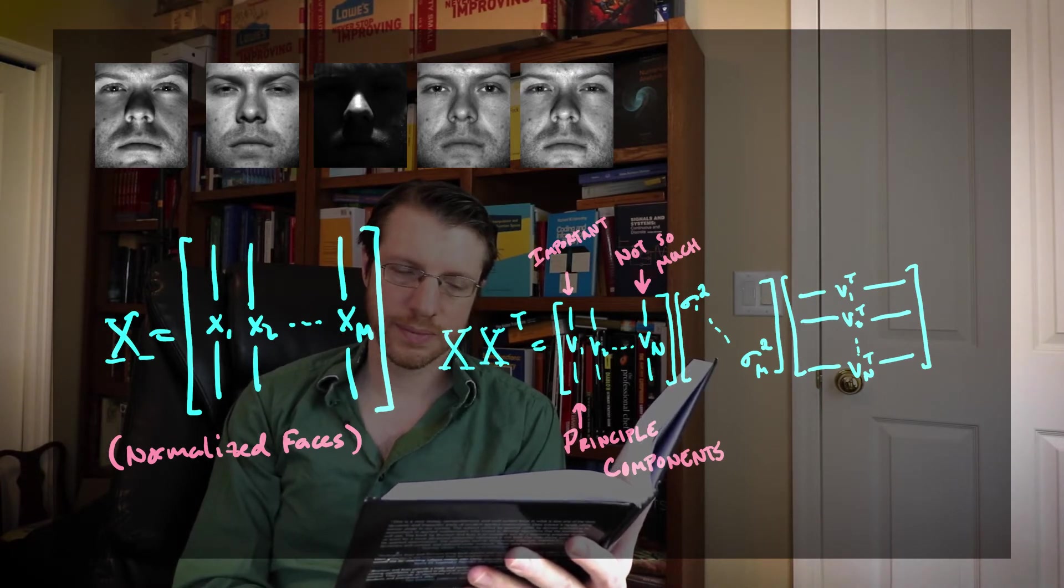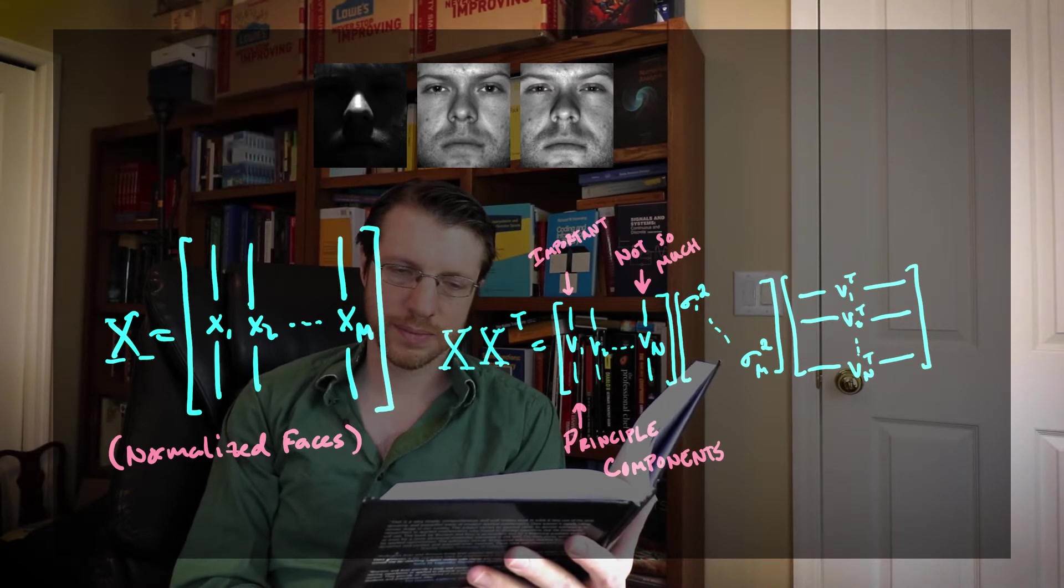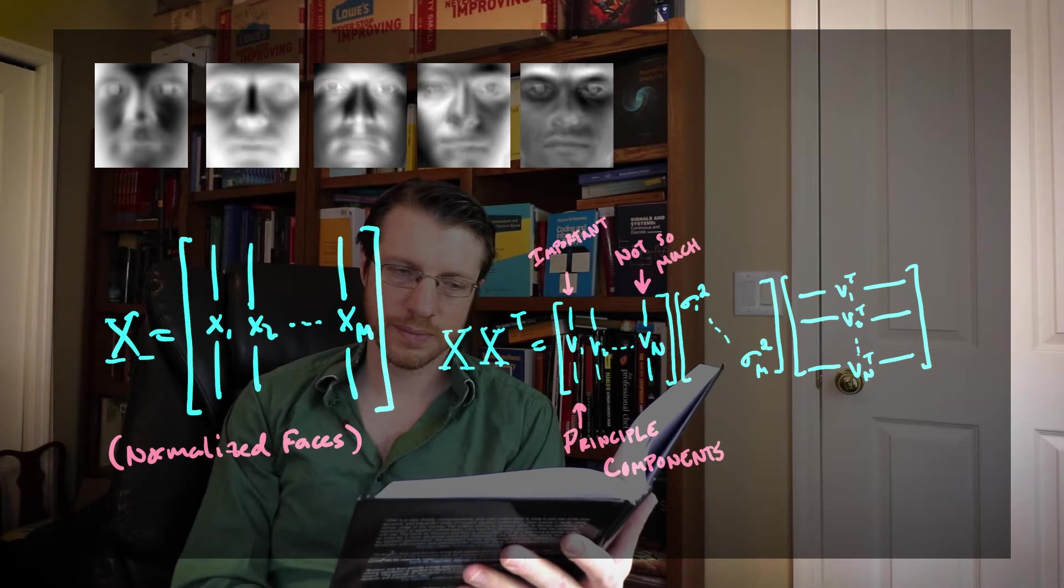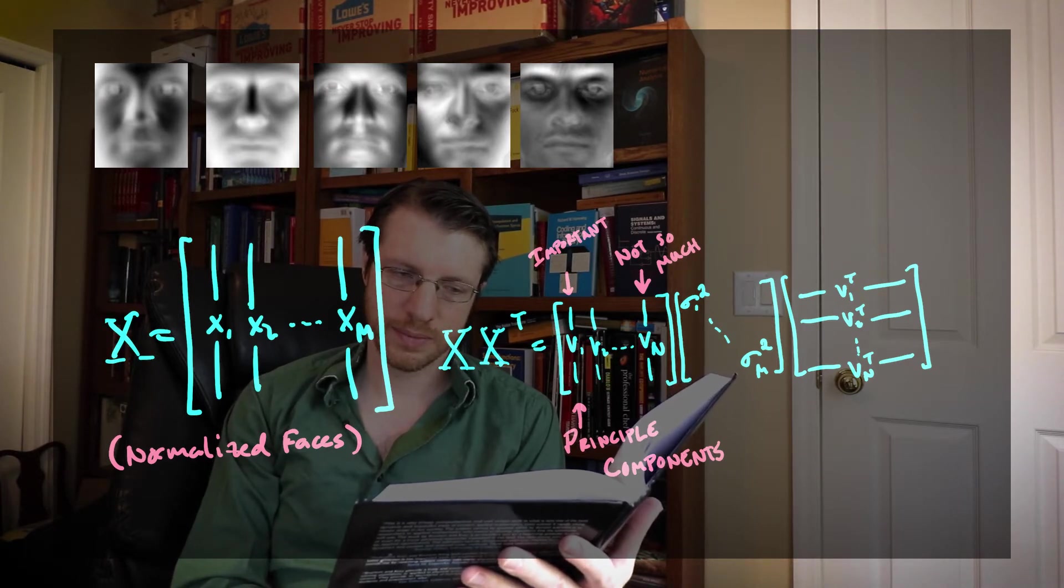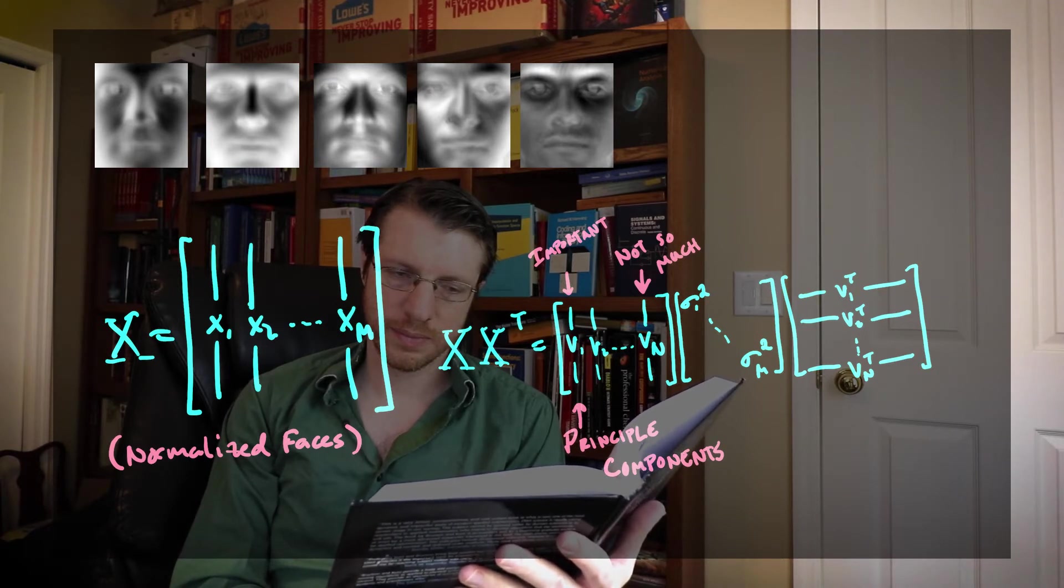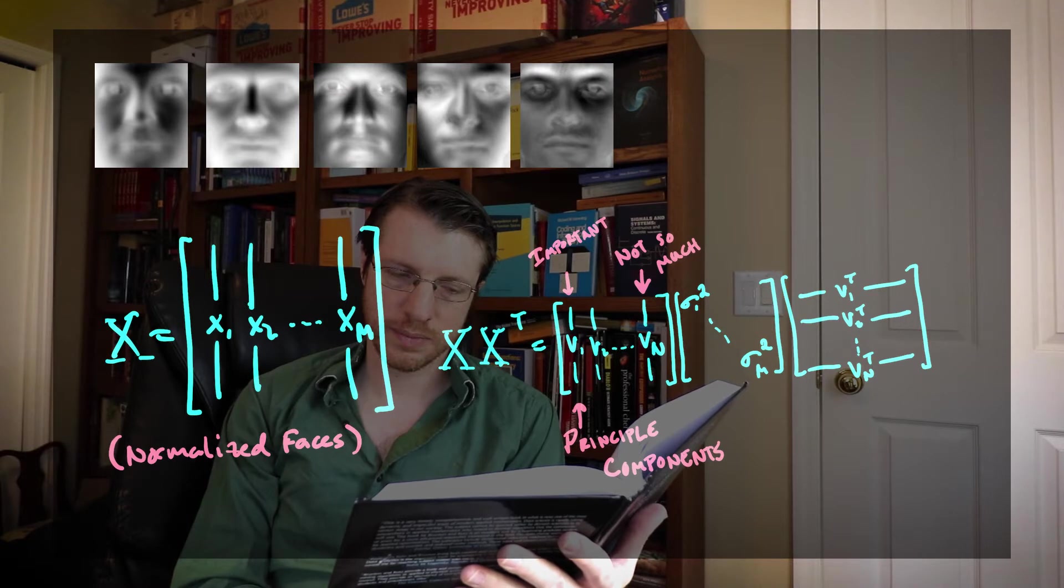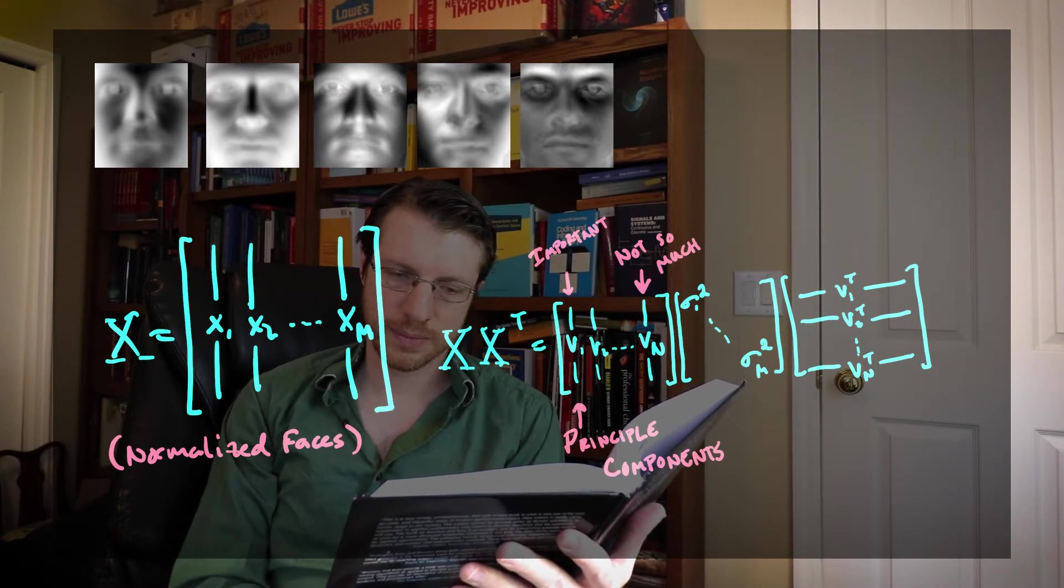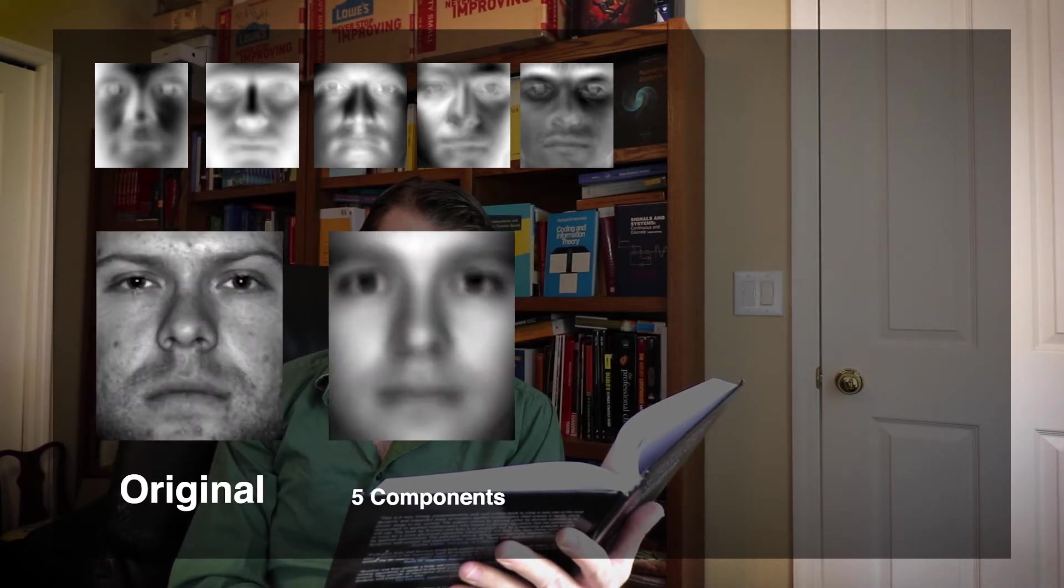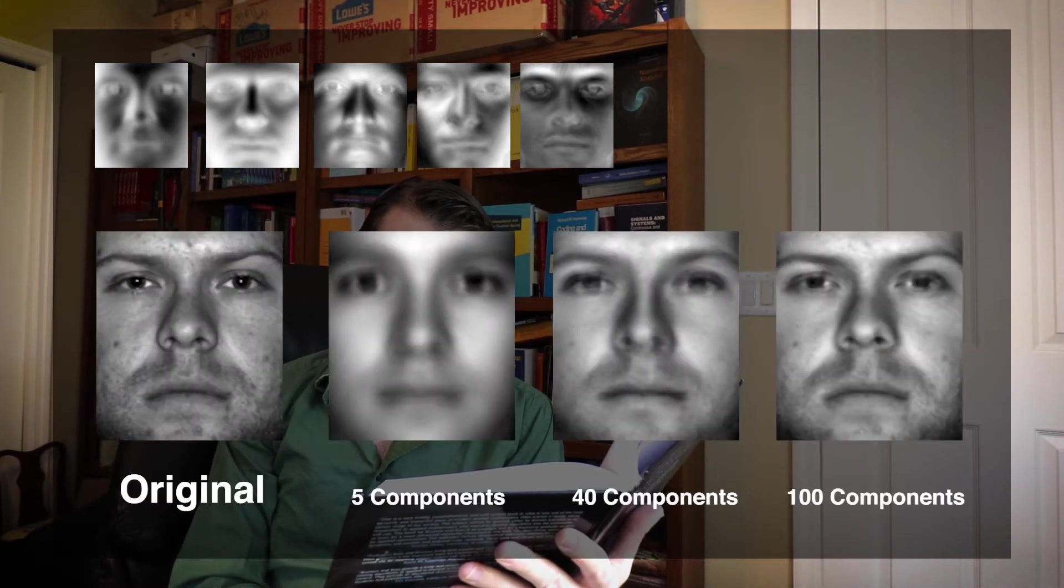Then what you get is a collection of components that have associated eigenvalues, and those eigenvalues tell you how important each one of our components are. So the component corresponding to the largest eigenvalue is going to be the main descriptor of all your data.